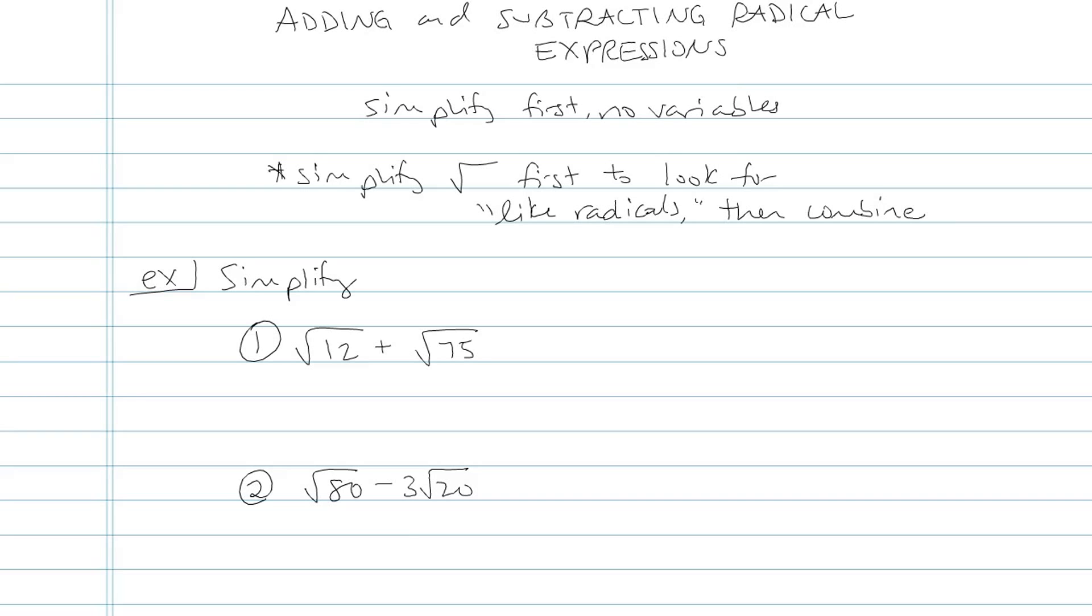So what I need to do in example one is, it looks like square root of 12 and square root of 75 are not the same radical. What I need to do is see if they really are the same radical, just in disguise.